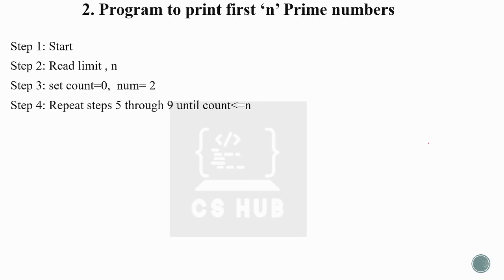Repeat steps 5 through 9 until count is less than or equal to n. The count equals the number of primes found. We check each number starting from 2 to determine if it is prime using the same inner loop logic. If it is prime, we print it and increment the count.